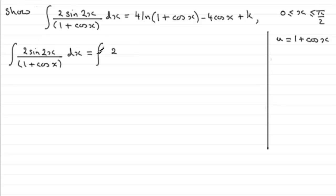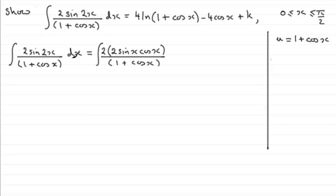So I'm going to write that 2 out front, multiplied by the expansion of sin(2x), which is 2sinx·cosx, all divided by (1 + cosx). And to change the variable into u's, I'm going to change dx to (dx/du)·du — it's as if they cancel. Now you can see that we're integrating with respect to u, not with respect to x.